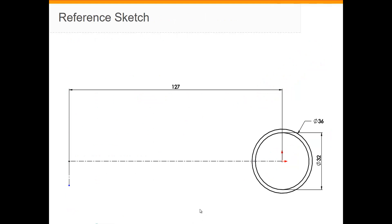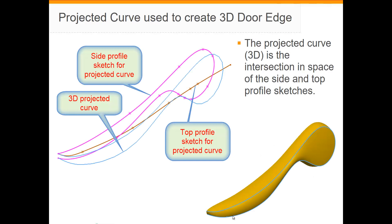The reference sketch gives us an idea of the size of the handle — it's 127 millimeters from the end to the center of the rounded part. The projected edge is made up of two separate 2D sketches: the side profile shown in purple, and the shape of the curve when looking down from the top. The projected curve tool gives us the intersection in space of these two curves.